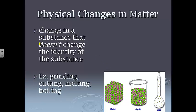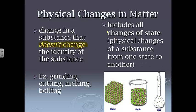Physical changes. Physical changes are a change in a substance that does not change the identity. We already talked about a physical property, which is really essentially the same definition. For example, grinding, cutting, melting, boiling. I'm changing the shape. I might be changing the state, but I'm not changing the identity. Which leads us to another term, which is changes of state. Changes of state are physical changes of a substance from one state to another.